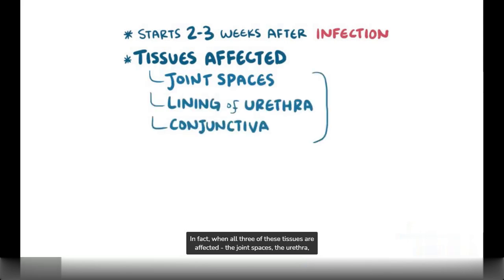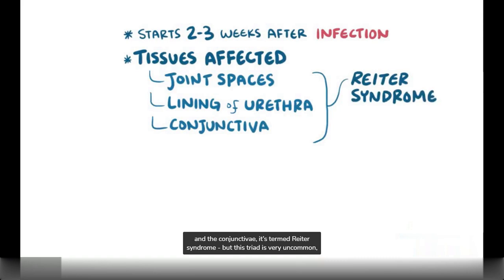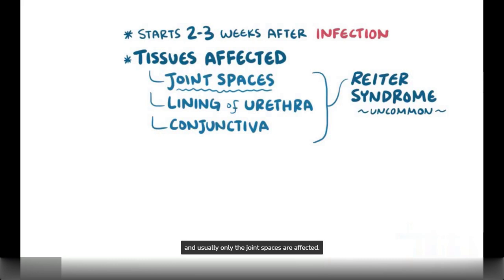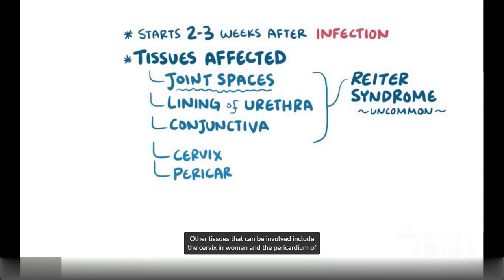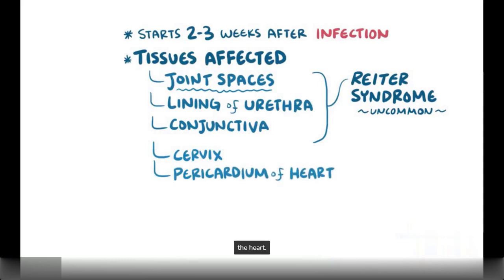In fact, when all three of these tissues are affected — the joint spaces, the urethra, and the conjunctiva — it's termed Reiter's syndrome. But this triad is pretty uncommon, and usually only the joint spaces are affected. Other tissues that are sometimes involved include the cervix in women and the pericardium of the heart.